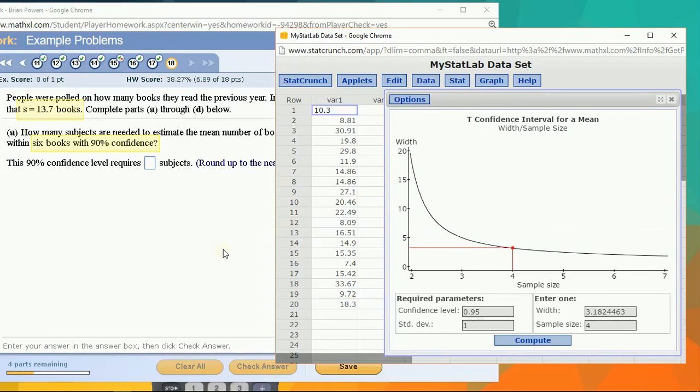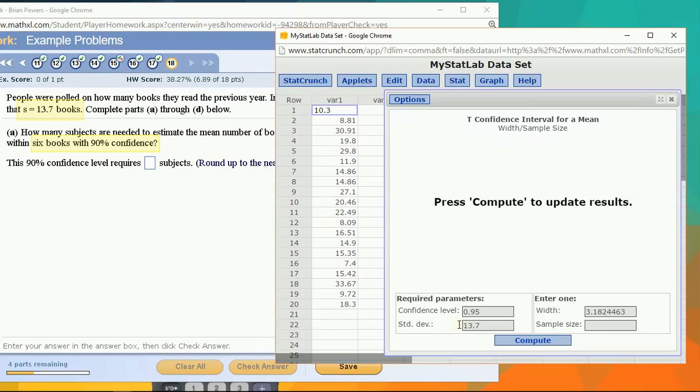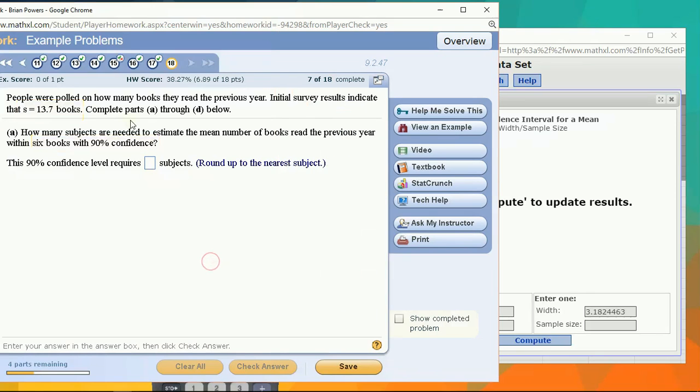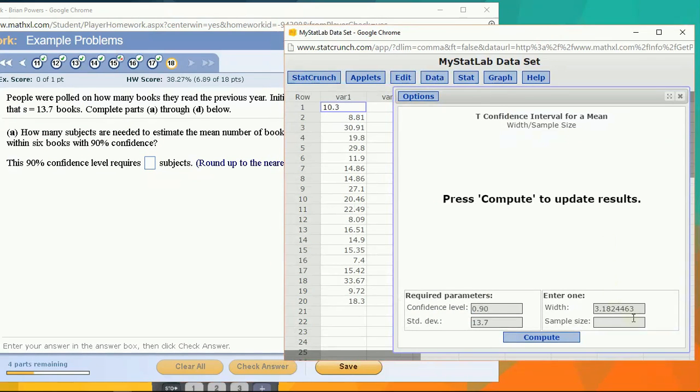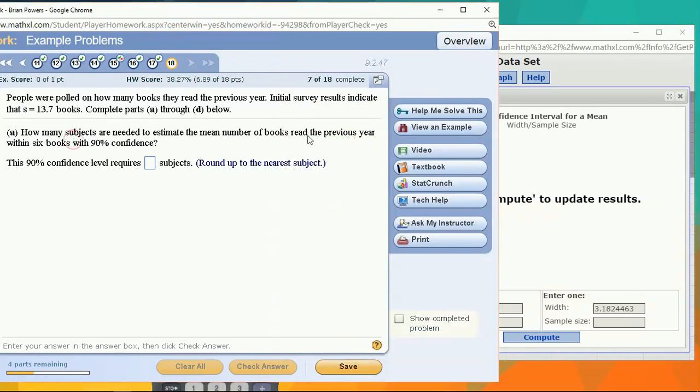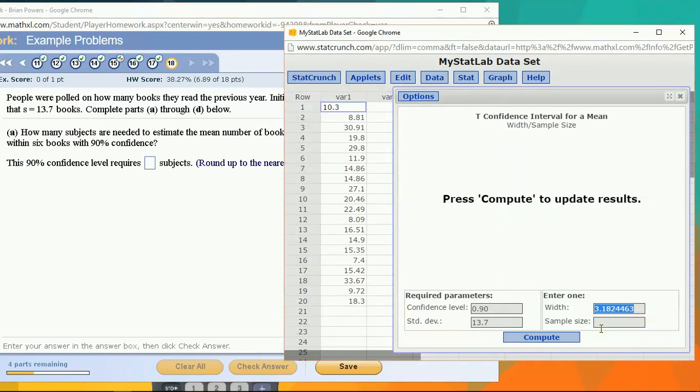So what we enter here is we have to give it the standard deviation at 13.7, and we give it the confidence level, 0.90. Now we don't know what the sample mean is, but that isn't going to change our confidence width. That's the only thing we need. We want to estimate the mean number of books within six books, so plus or minus six books. Remember, that means a width is 12 books. That's the full width of the confidence interval.